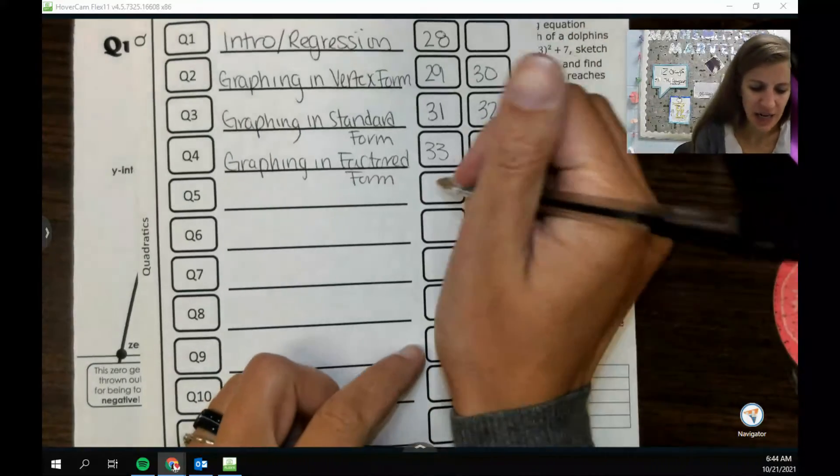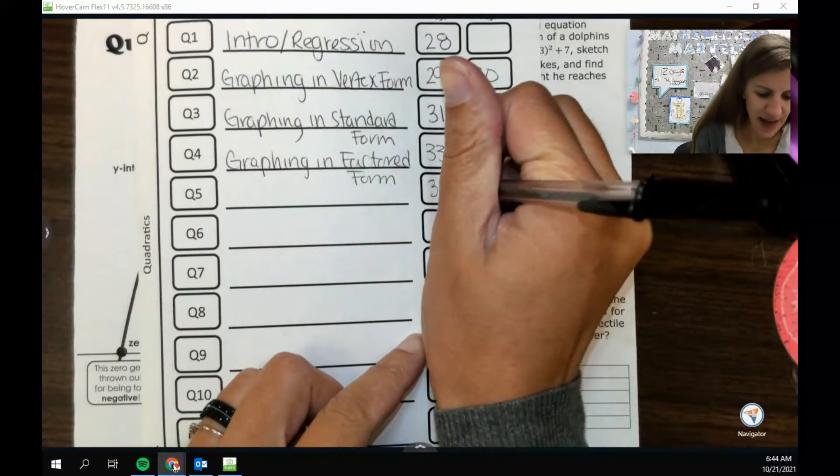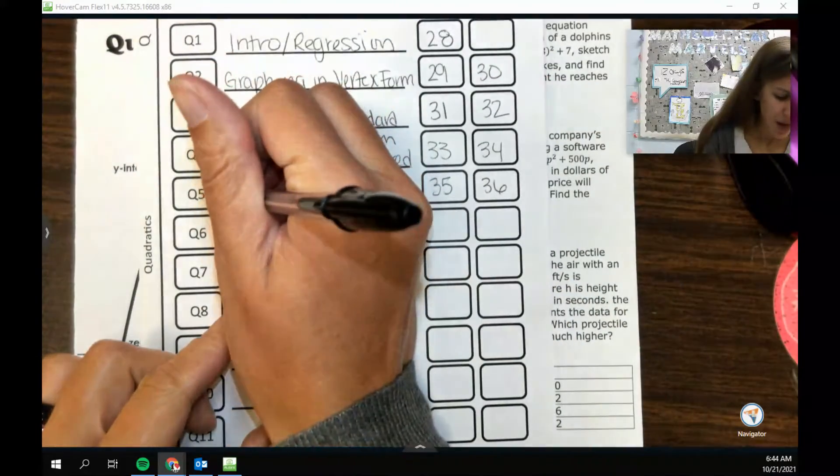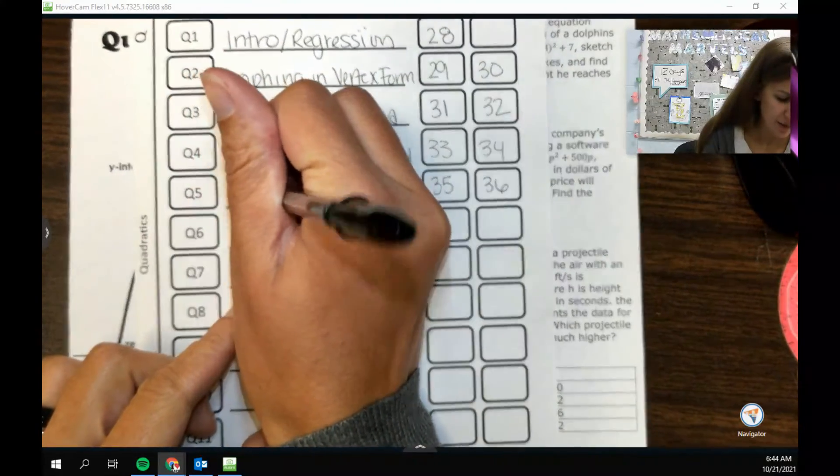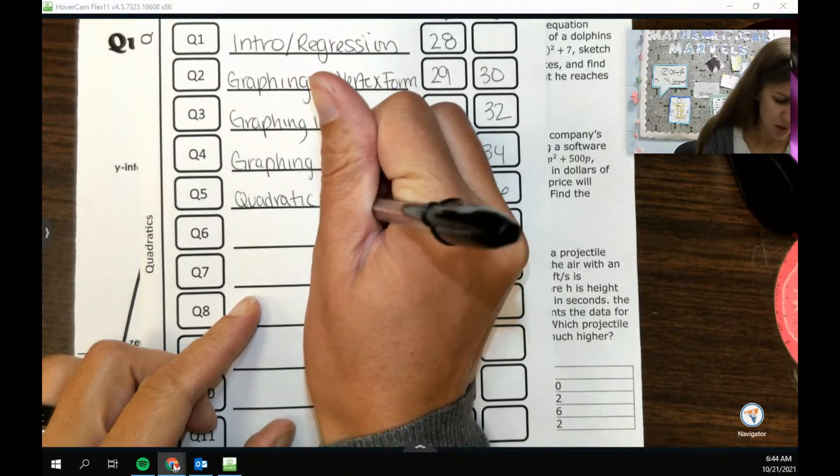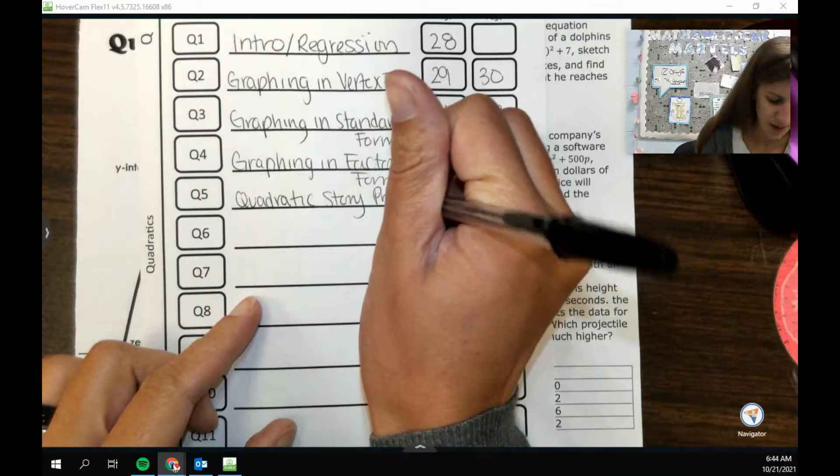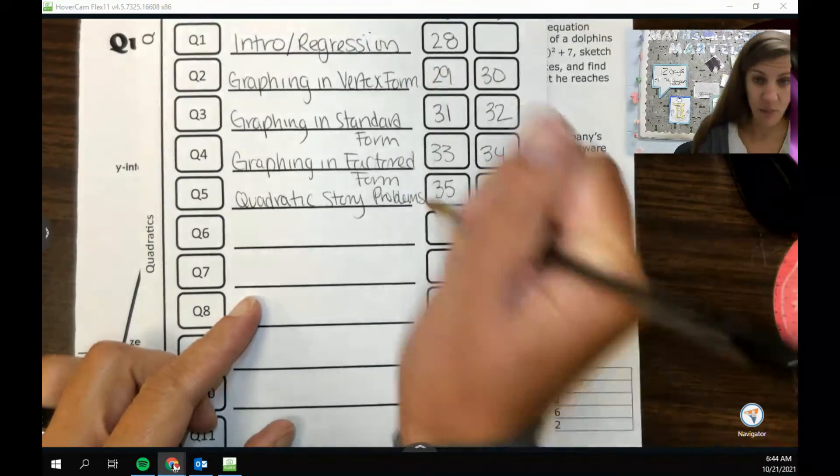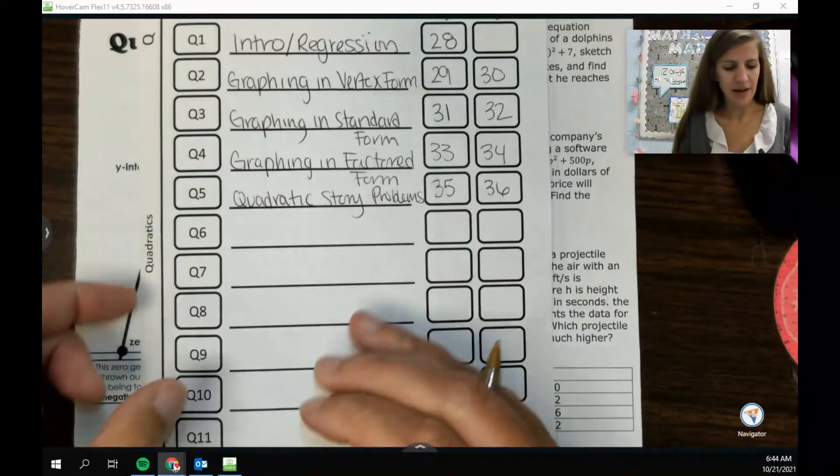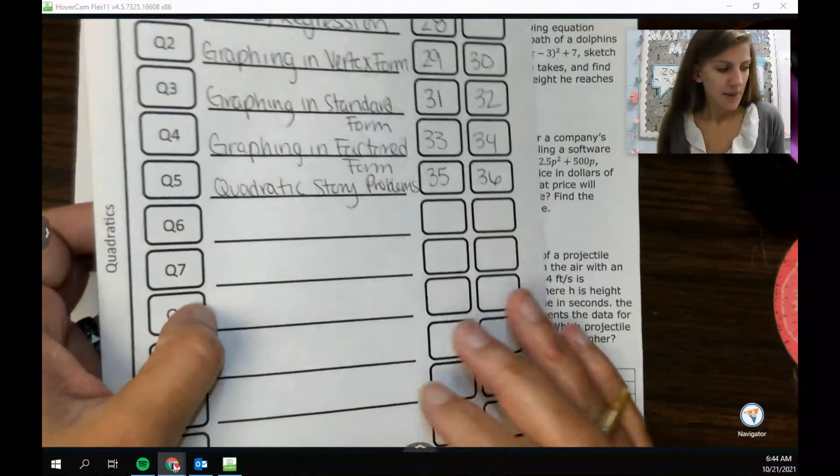All right guys, we're going to add to our notes again. We're going to do pages 35 and 36 and we're going to talk about quadratic story problems a little bit. We're going to talk about these a lot more later, but I feel like it's good to talk about it a little bit right now.